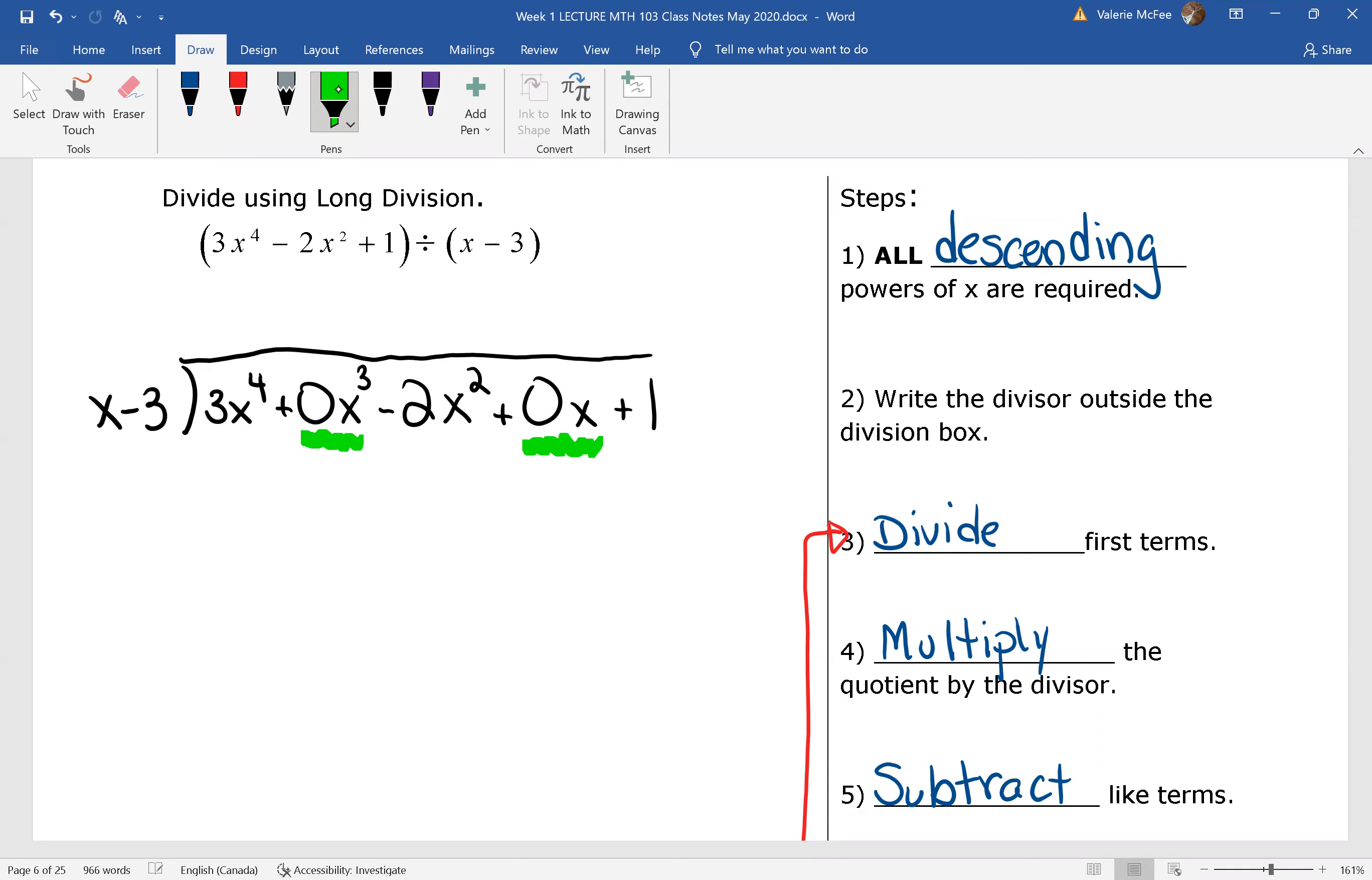The next step is to divide. You divided the first terms, 3x to the power of 4 divided by x and wrote your quotient on top.